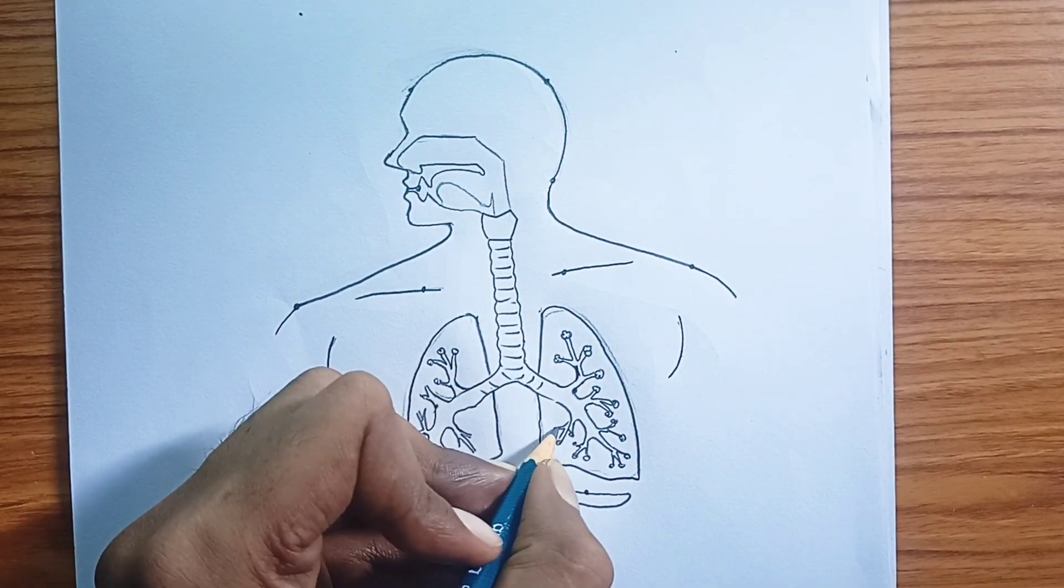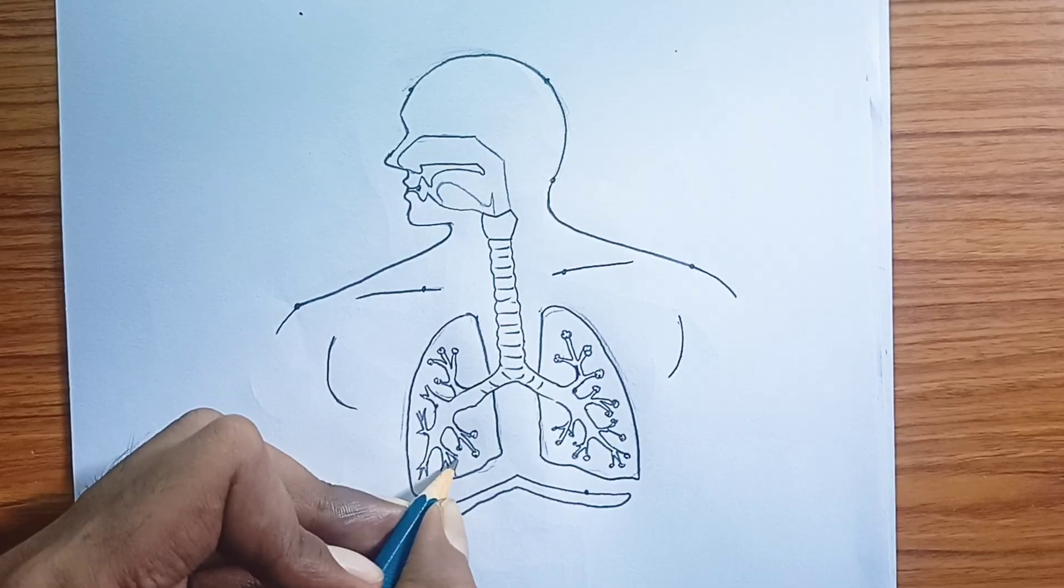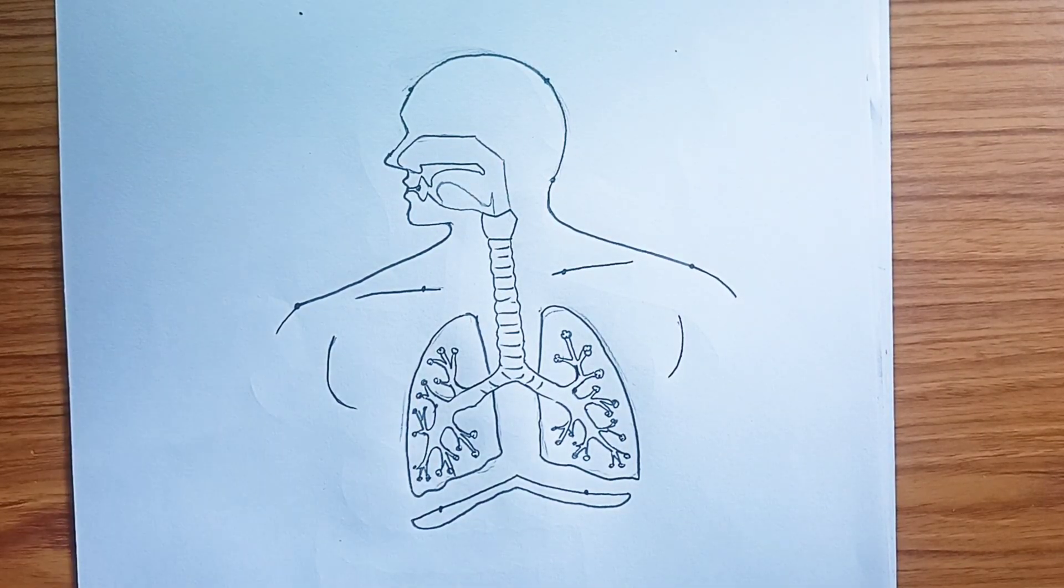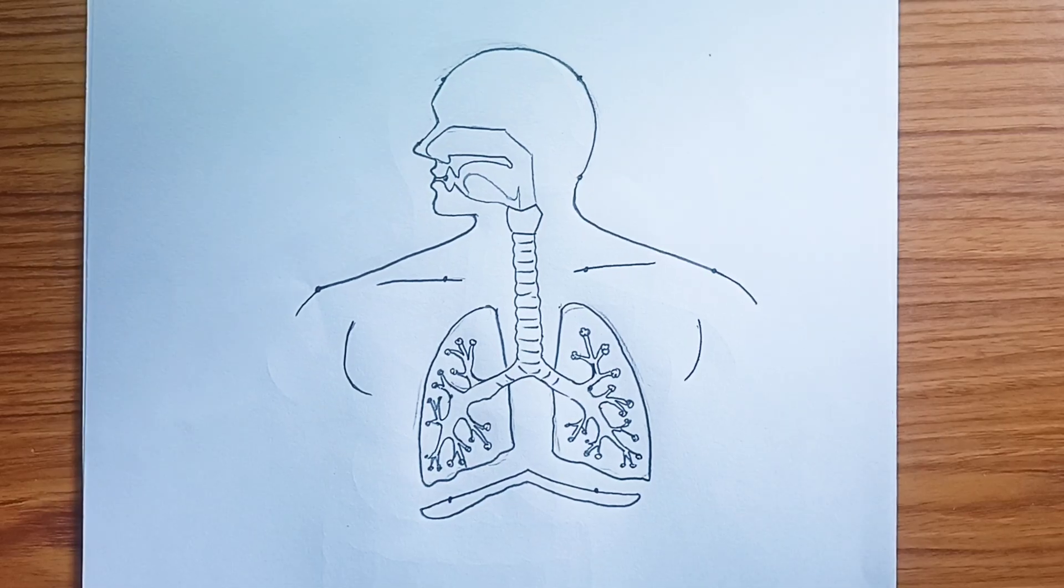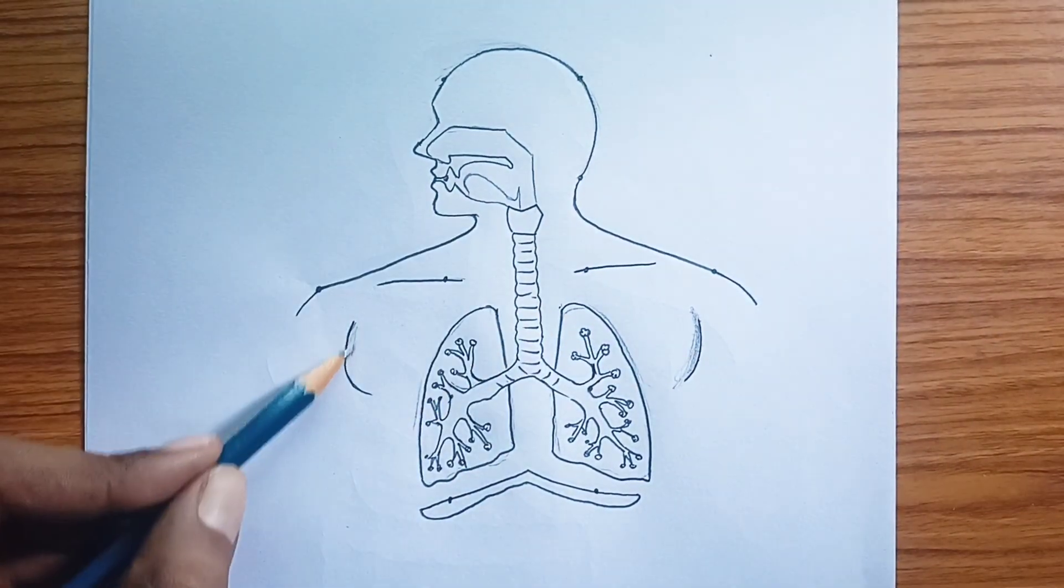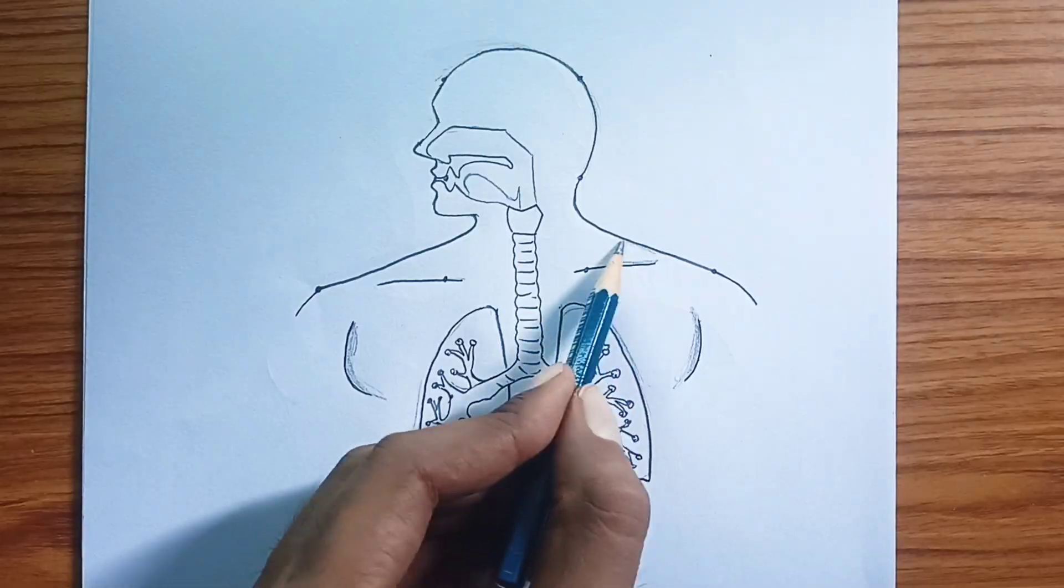Your lungs are spongy, elastic organs that fill most of your chest cavity. The right lung has three lobes, while the left lung has two, to make space for the heart. The elasticity of the lungs helps with breathing.